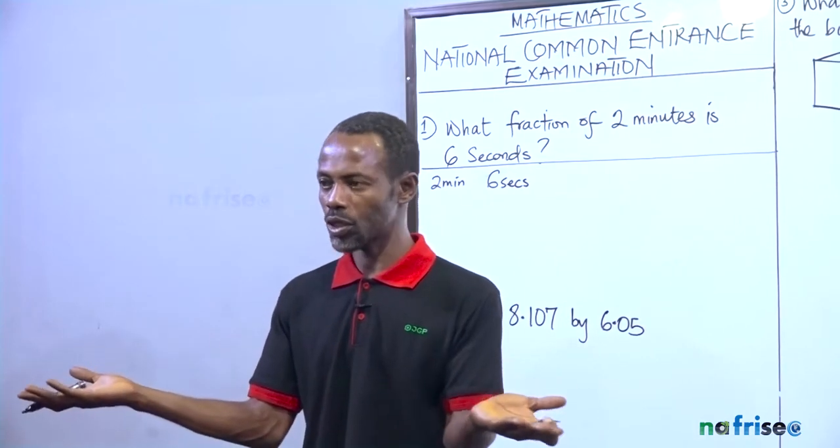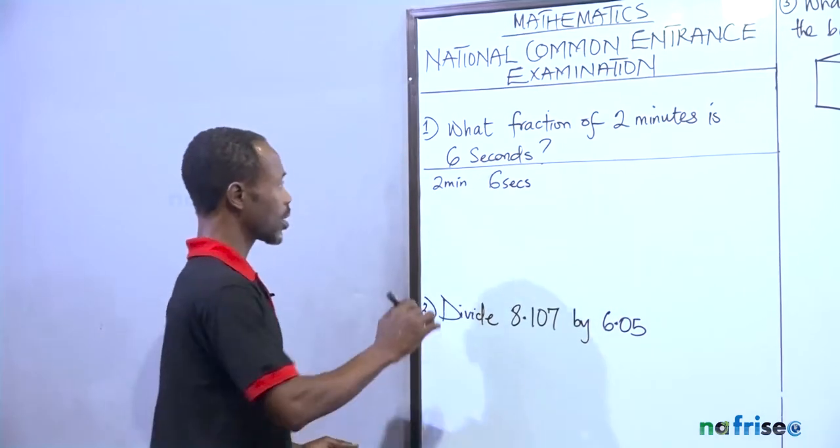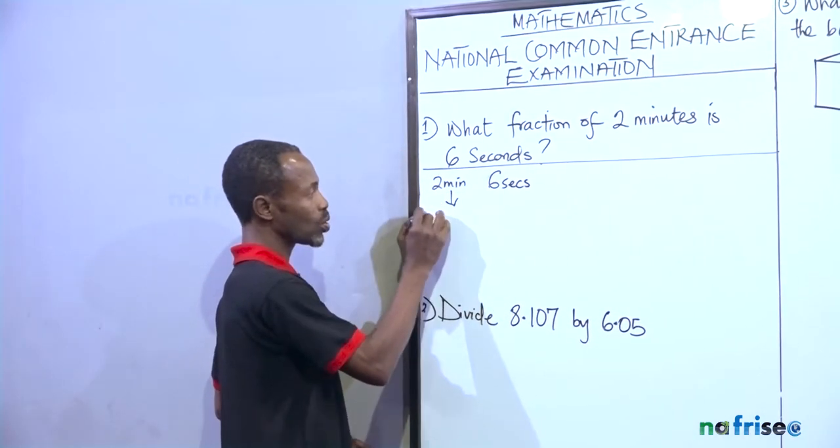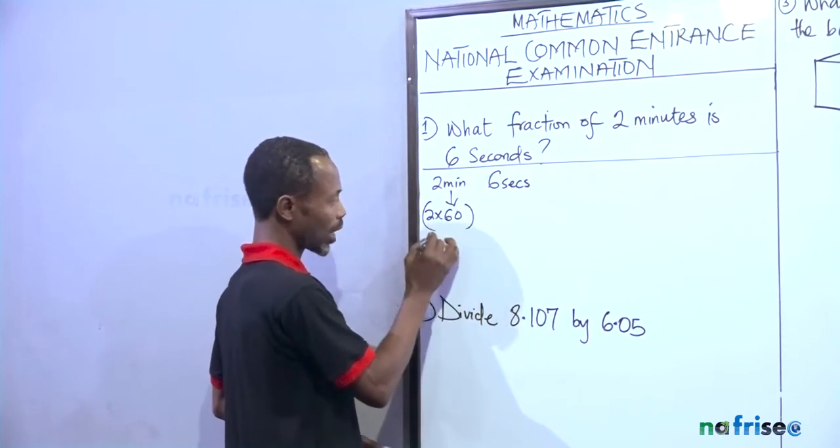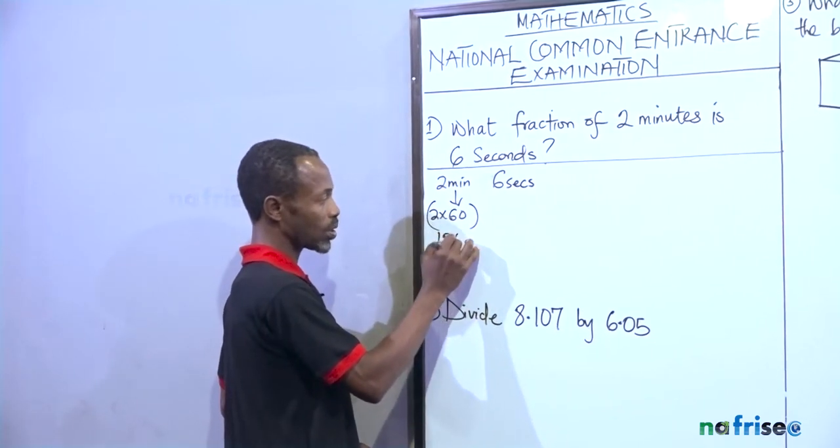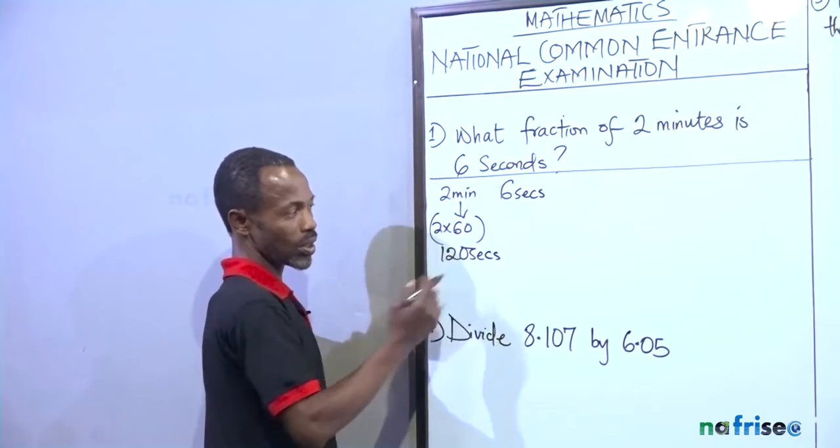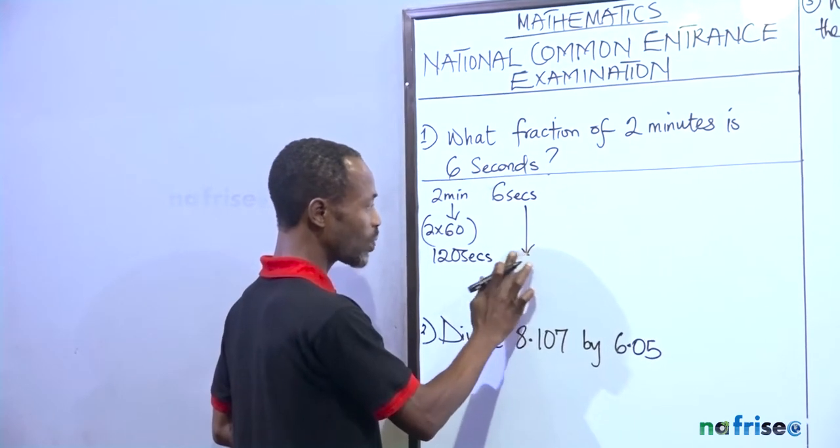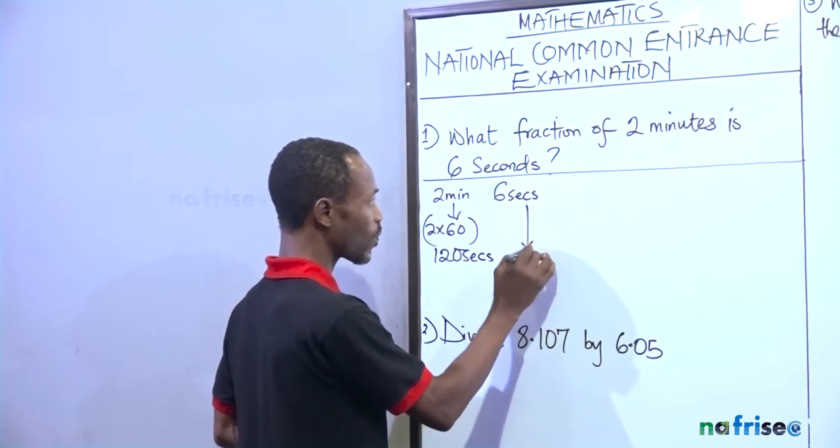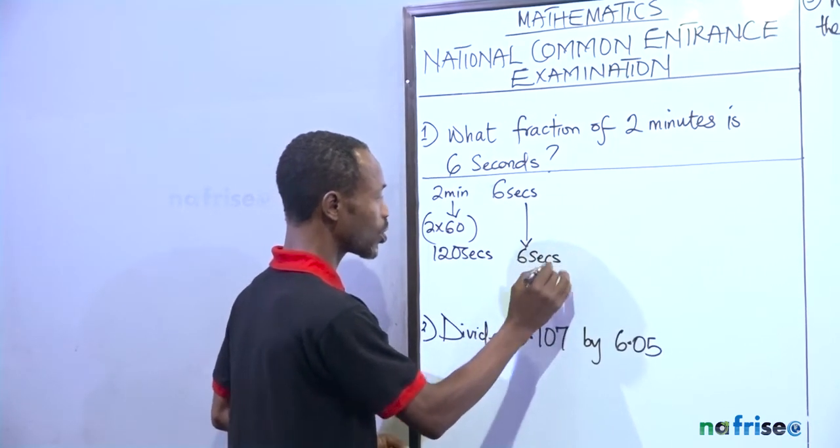Let's not call it ratio. They'll be in the same denominators, the same parameters. This 2 minutes will be 2 times 60. And that should give us about 120 seconds. So 2 minutes is 120 seconds. And this is still the same as 6 seconds. So if they ask you what fraction of 2 minutes is 6 seconds,